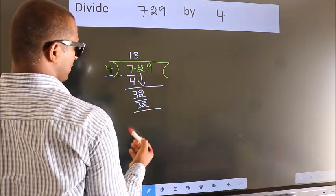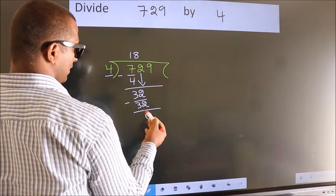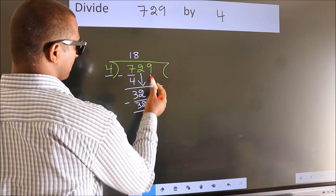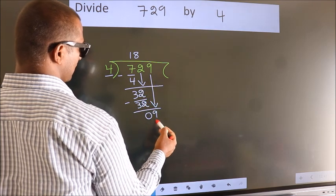Now we subtract. We get 0. After this, bring down the beside number. So, 9 down. So, 9.